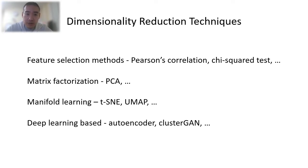There are actually quite a lot of techniques for dimensionality reduction. For example, the feature selection methods like Pearson's correlation and the feature projection methods like matrix factorization, manifold learning, and some recent deep learning-based models. But today, we will focus on PCA, t-SNE, and UMAP.